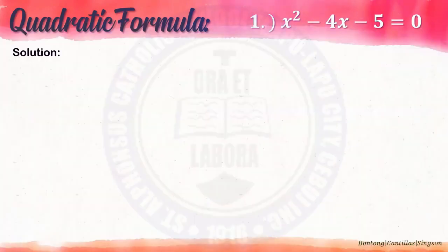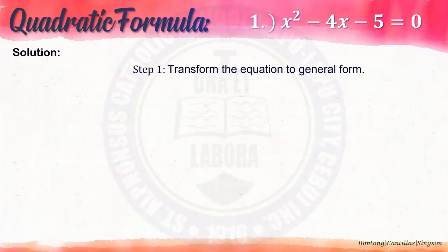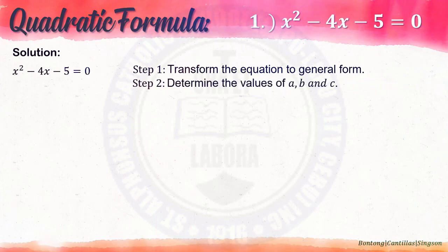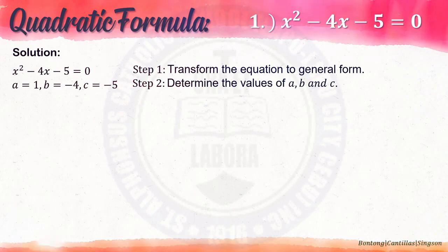Example number 1: x squared minus 4x minus 5 equals 0. Step 1: Transform the given equation to the general form — luckily, the given is already in general form. Step 2: Determine the values of a, b, and c. Remember, you cannot identify the values of a, b, and c if your given is not yet in general form. So, a is 1, b is negative 4, c is negative 5.